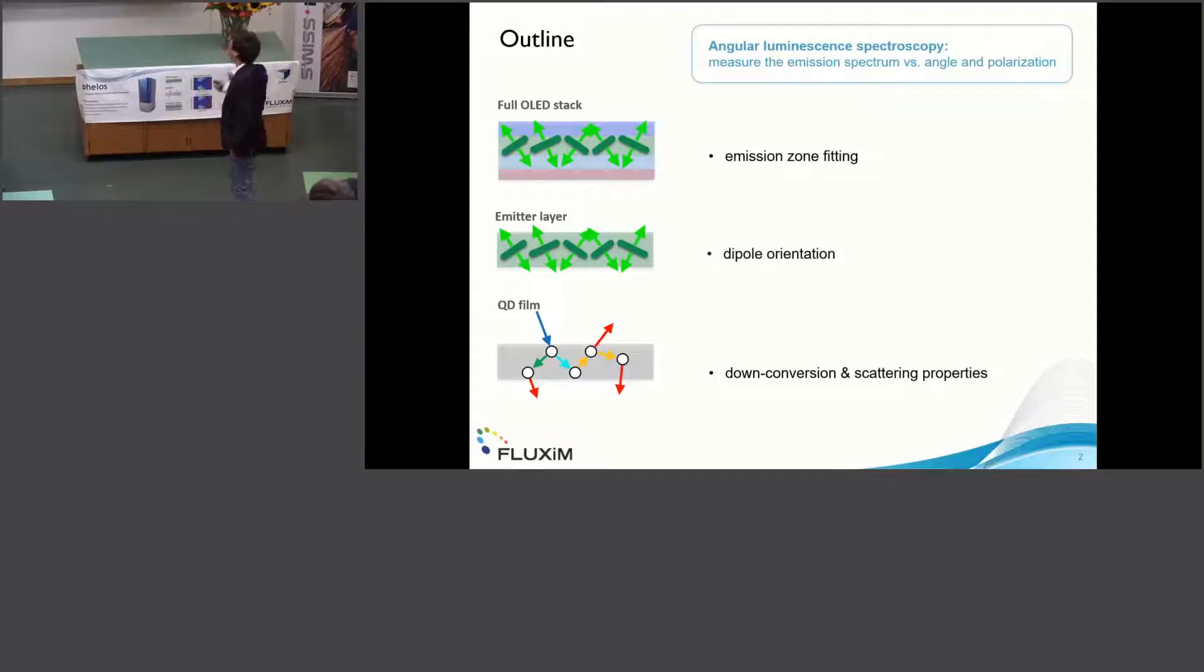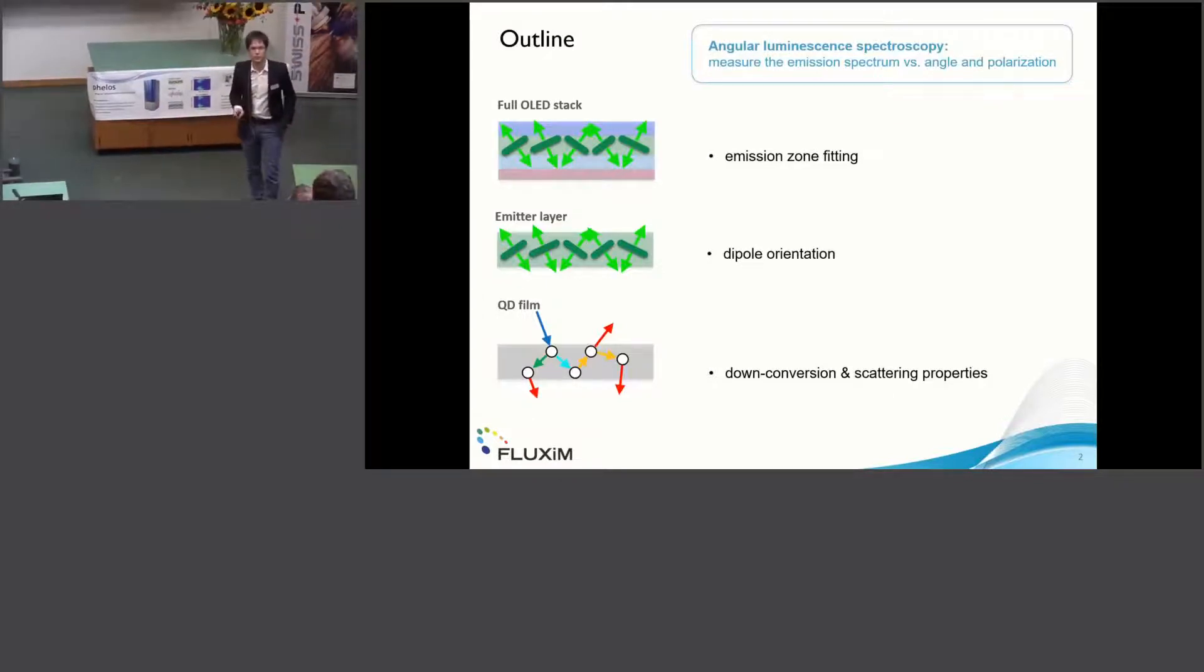We can use this to extract the emission zone from a full OLED stack, but we can also try to back-extract the orientation of the emitter dipoles within an emitter film. Very recently, we started exploring quantum dot down-conversion properties using our new angular luminescence spectroscope instrument.